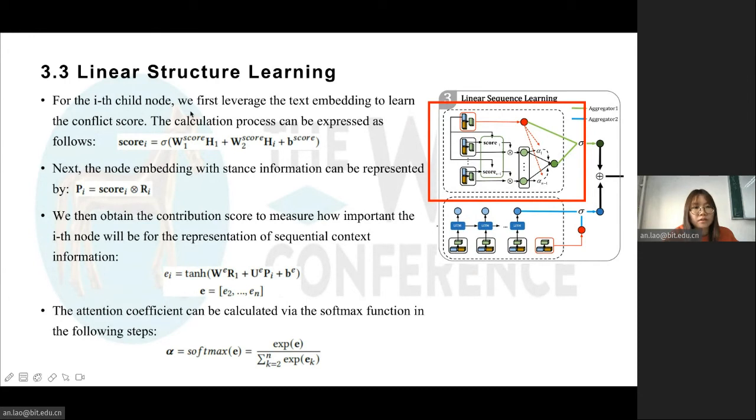For the i-th child node, we first leverage the text embedding to learn the conflict score, where H1 is the textual feature of the root node and Hi is the textual feature of the i-th node. Next, we can represent the node embedding with stance information. We then obtain the contribution score to measure how important the i-th node will be for the representation of sequential context information. E is the contribution score's vector, and R1 represents the root node embedding.